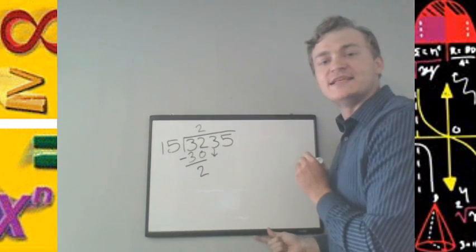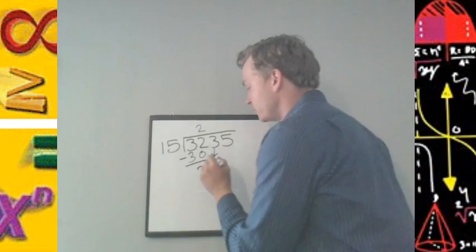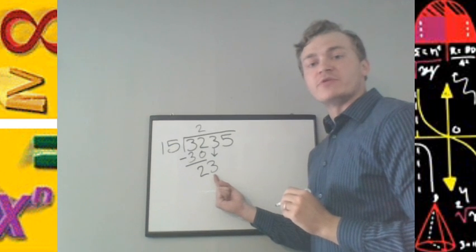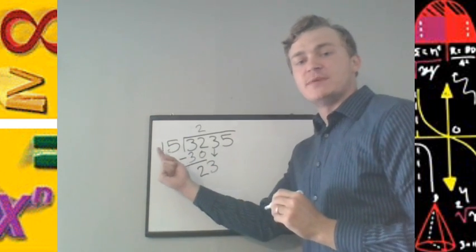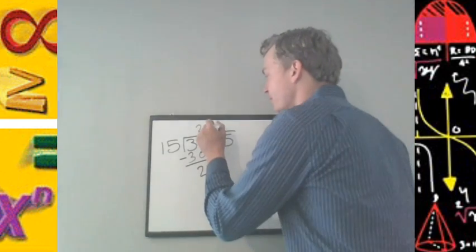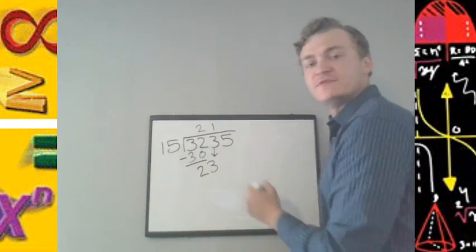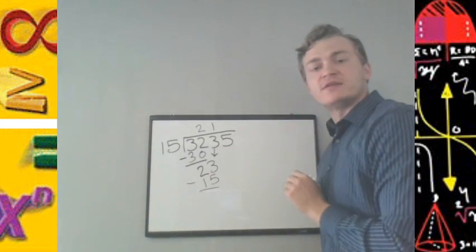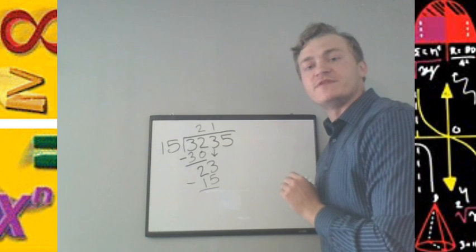We bring down the next digit, 3. To now answer the question, 23 divided by 15, how many times will 15 go into 23? One time. 1 times 15 is 15. Subtract to find the remainder. 23 minus 15 is 8.